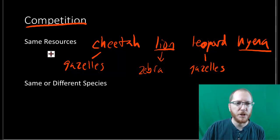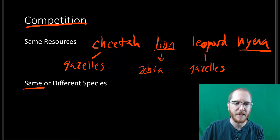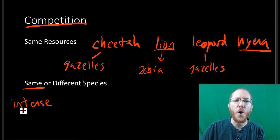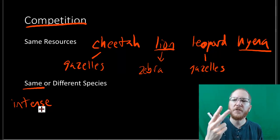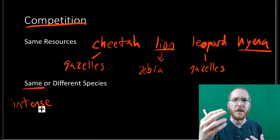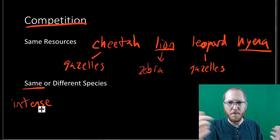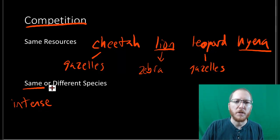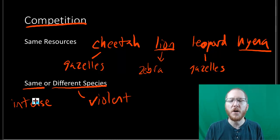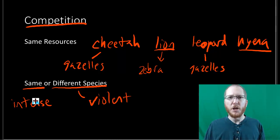And then you'll see that competition can be a very intense thing if it's amongst the same species. Because you want all the same things. You're all after mates, you're all after the same food, you're all after the same places to live, to raise offspring, it could be burrows and nests. And so you all want the same things. So it's very intense. But amongst different species, you can see where oftentimes it'll be more violent.